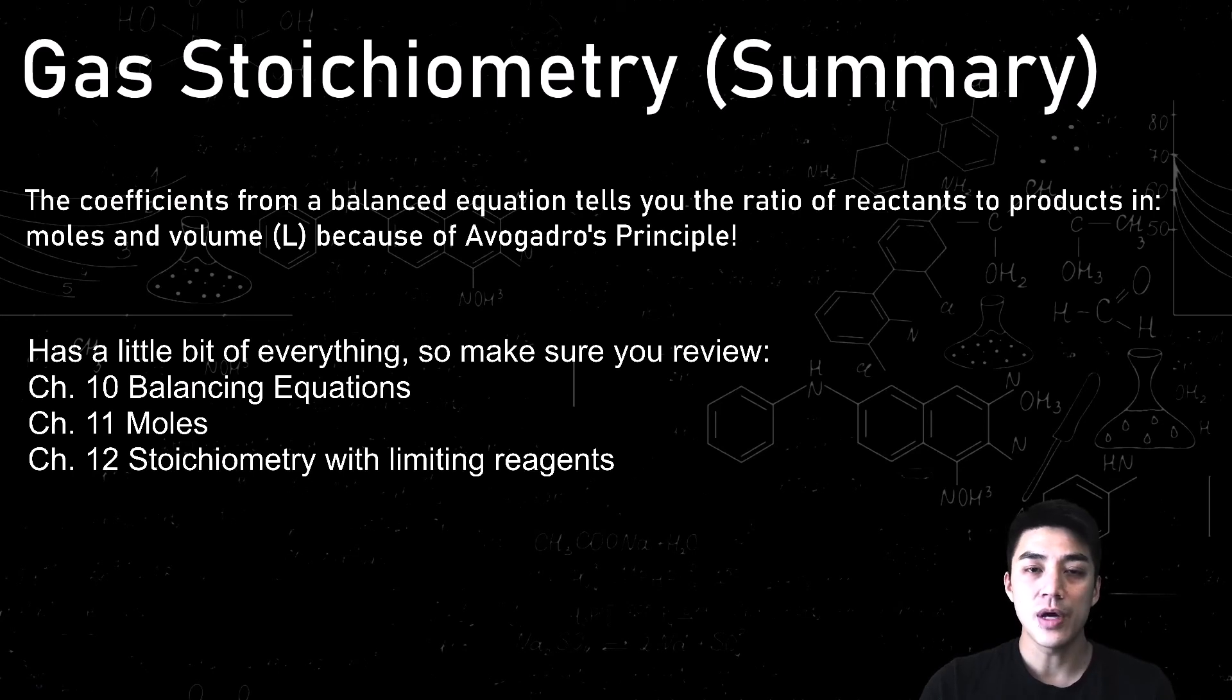So let's give you a summary on gas stoichiometry before you decide to run off. So the coefficients in a balanced equation tell you the ratio between reactants and products in both moles and volume. And that's because of Avogadro's Principle, which states that 1 mole of any gas at STP will occupy a volume of 22.4 liters. So this chapter has a little bit of everything in it, so make sure you review the Chapter 10 playlist on balancing equations, the Chapter 11 stuff on moles, Chapter 12 stoichiometry with limiting reagents, and you're good to go. Thanks for tuning in, and I'll see you next time on Wind Chemistry.